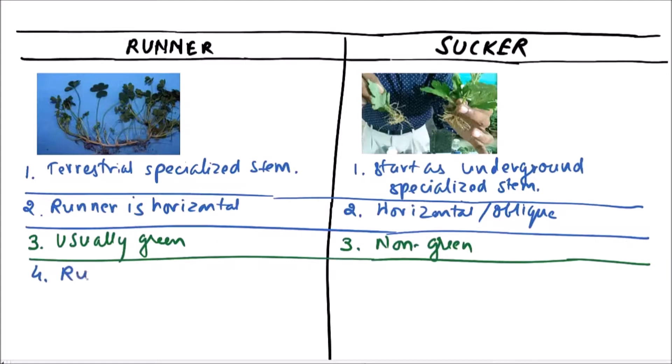Runner plays no role in perennation, while suckers play a role in perennation.